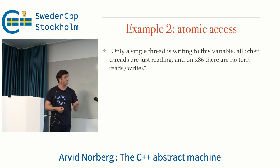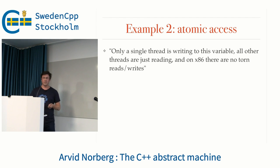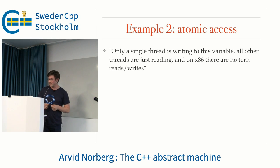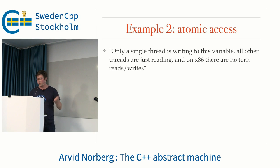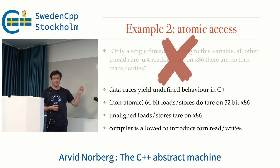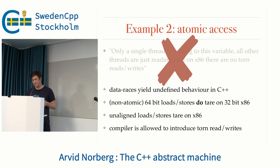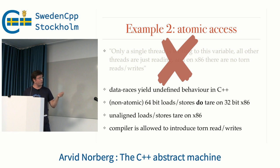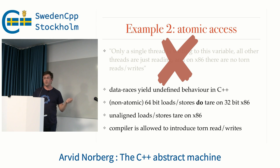Example 2: "I only have a single thread writing to a variable and all other threads are only reading it. And on x86 there are no torn reads and writes." The implication of this statement is it doesn't have to be an atomic operation, because we know there are no torn reads and writes. But obviously it's a data race, and data races in C++ are undefined behavior, so basically anything can happen. More concretely, non-atomic 64-bit loads and stores do tear on 32-bit architectures, because the compiler will actually generate two instructions.